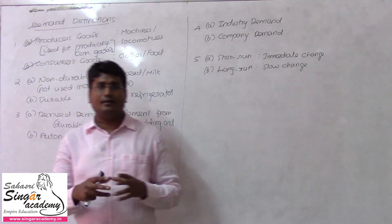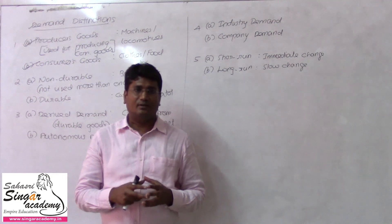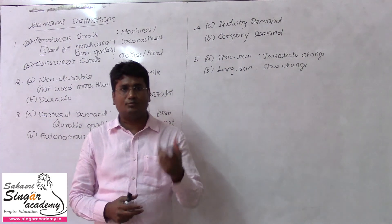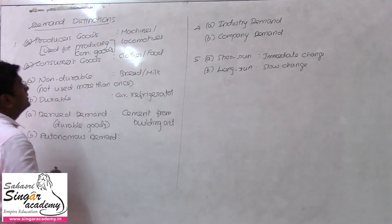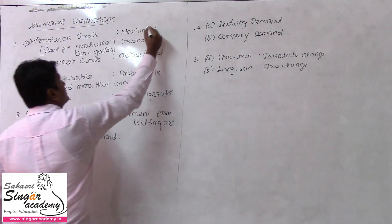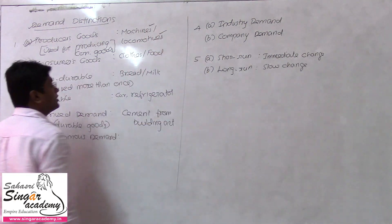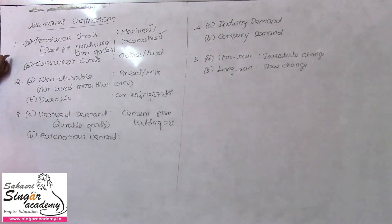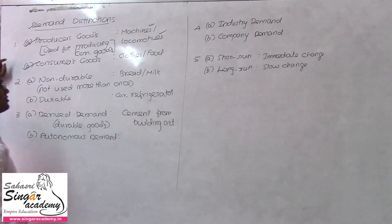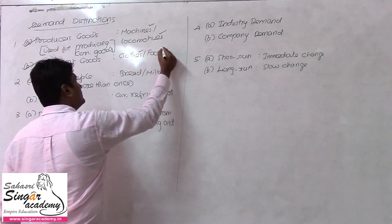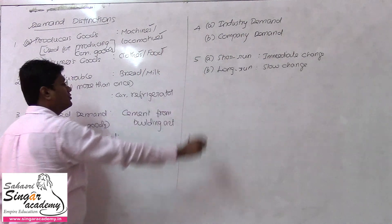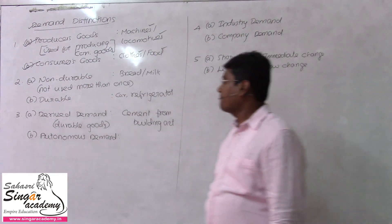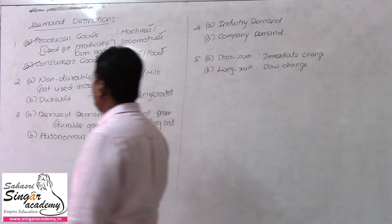Another example: ice cream. The refrigerator used to produce ice cream is a Producer Good, while the ice cream itself is the Consumer Good. Similarly, machines, locomotives, ships, and buses are Producer Goods, while clothes and food are Consumer Goods. This is the first classification.